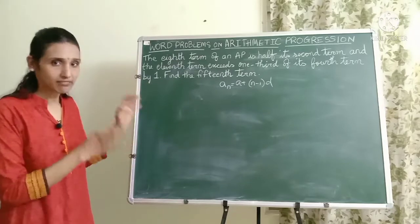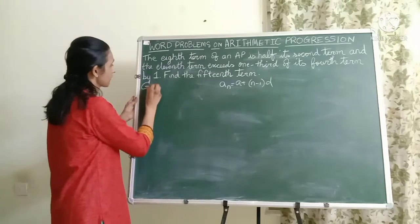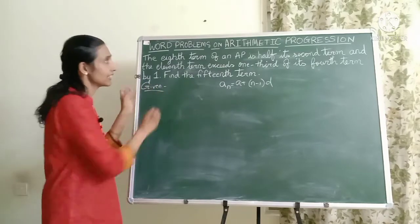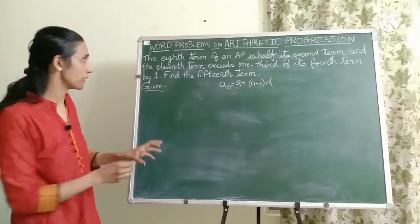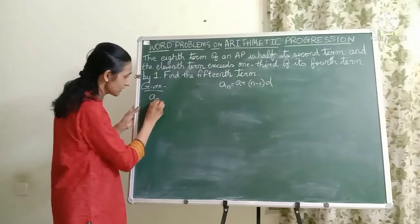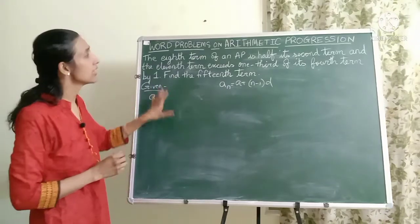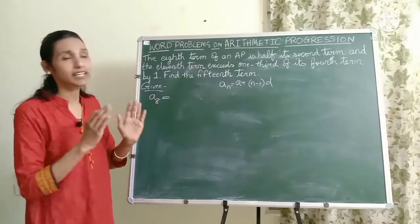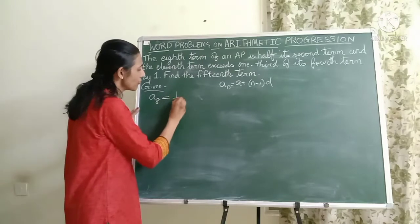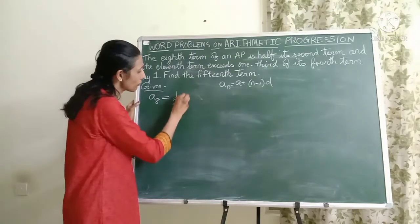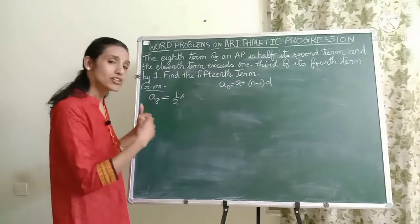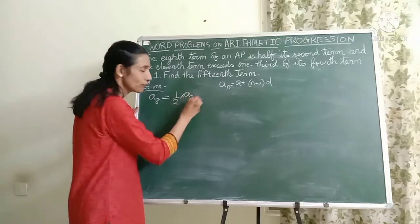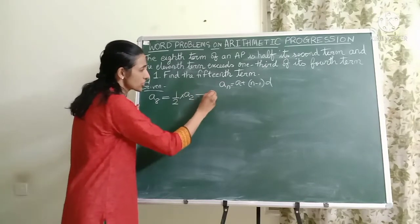So let's write the given data. What is given to us? They have given that the 8th term of the AP, so A8, N is 8, that is equal to half its second term. Half its second term means half multiplied by the second term. So the second term will be A2. This is my first equation.